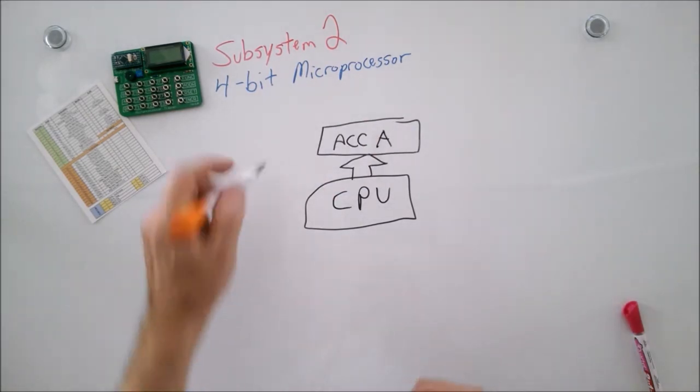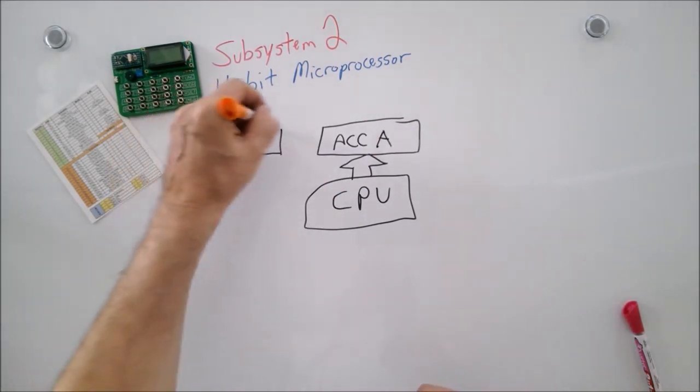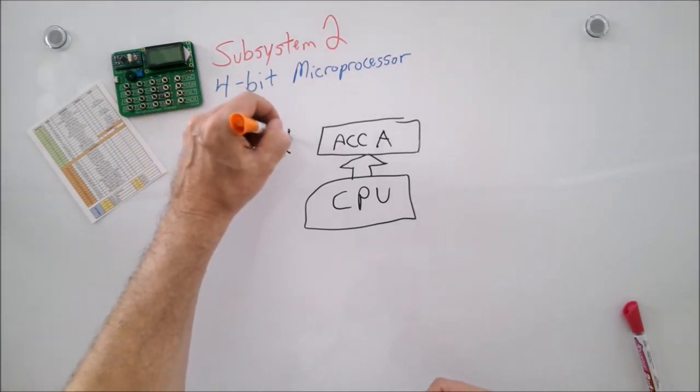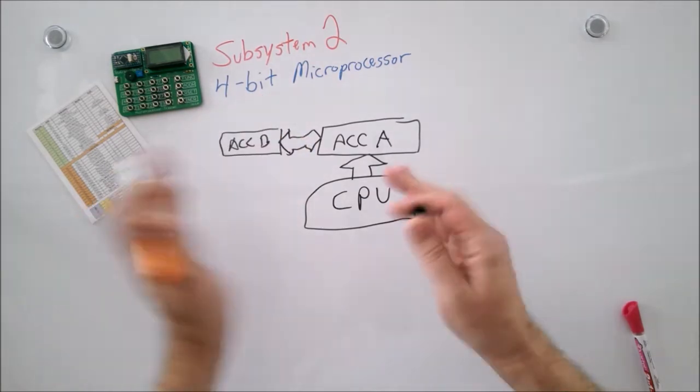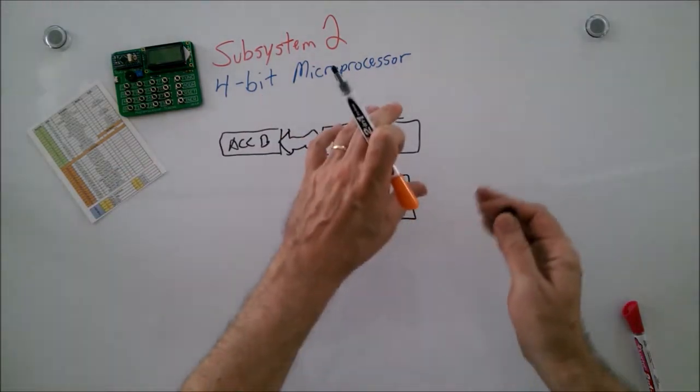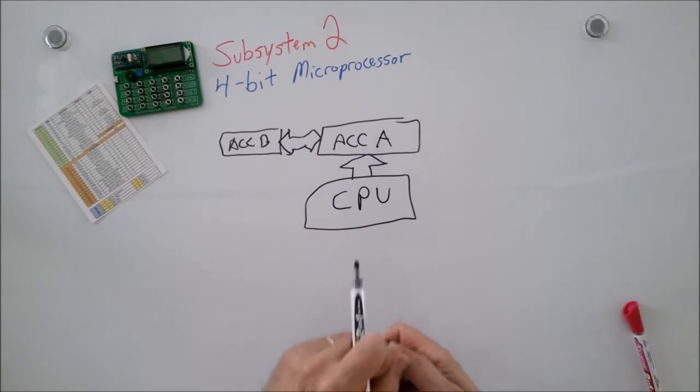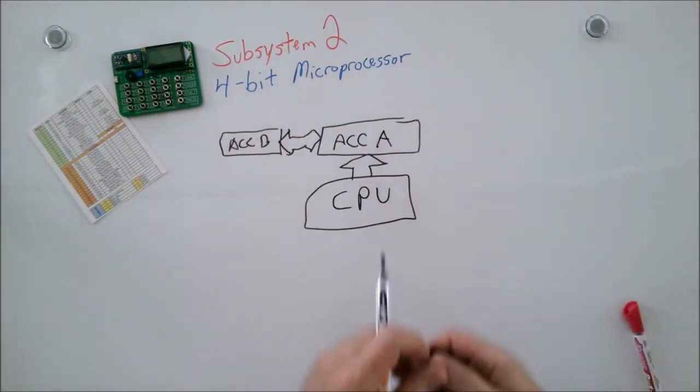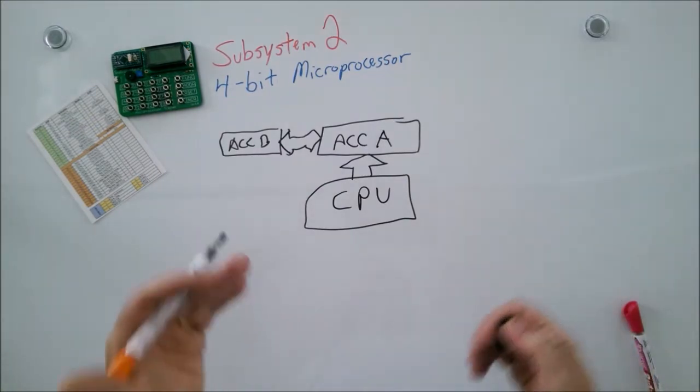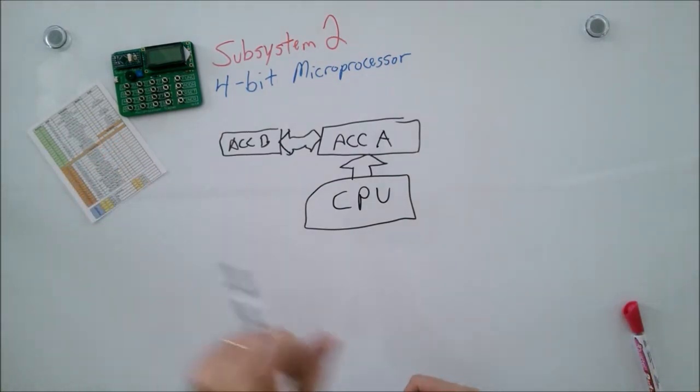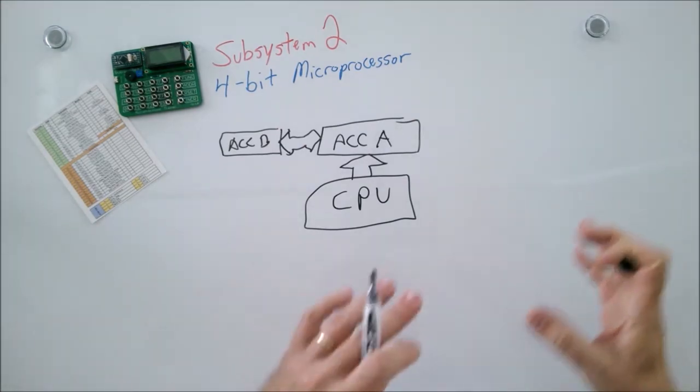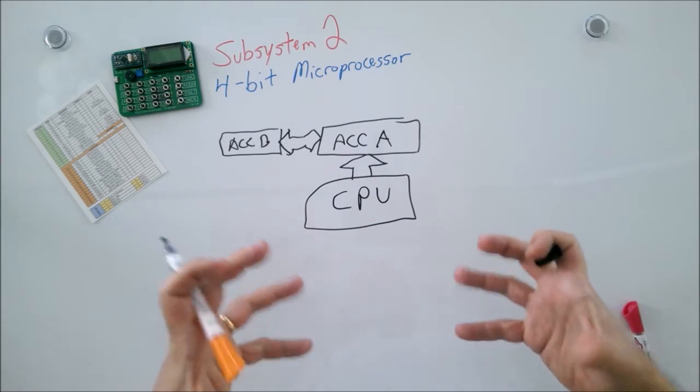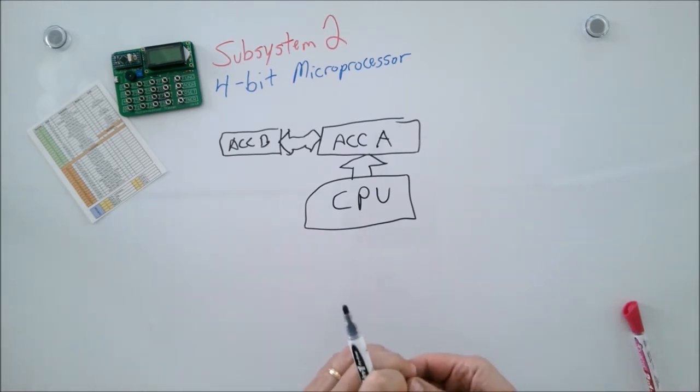We have other accumulators too. For instance, we have accumulator B. Accumulator B can swap information with accumulator A. These two passing information back and forth means I can temporarily store something I'm doing in accumulator A, do something else with it, and then take that information back when I need it. It's going to become really important as you learn more about this microprocessor, how we have to go juggling around all these things because of the limited amount of add-ons and memory locations that I have to work with.